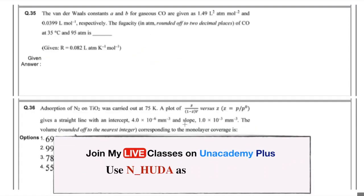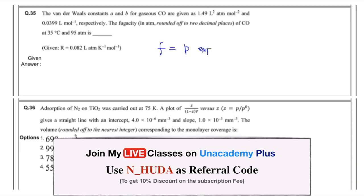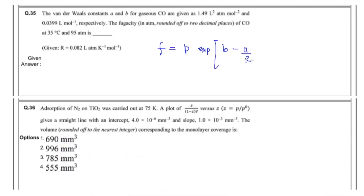The next question gave the van der Waals constants a and b for gaseous CO and asked for fugacity. The direct formula for fugacity of a van der Waals gas is f = P · exp[(b − a/RT) × P/RT]. Convert temperature to Kelvin, put in all values, and fugacity comes out around 88.57. I'm not entirely certain about this one, so please share in the comments if you have a different approach.